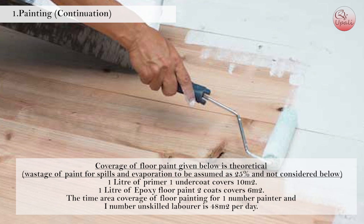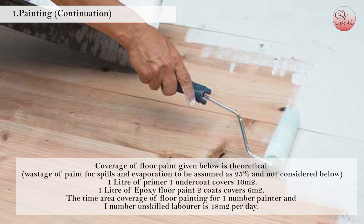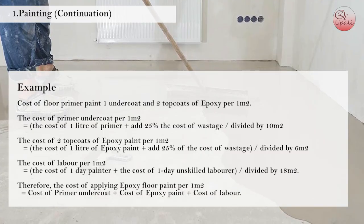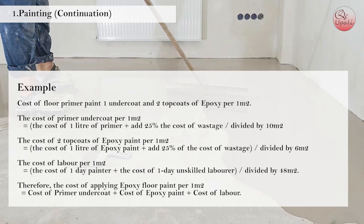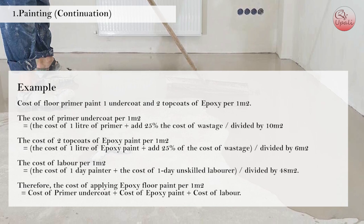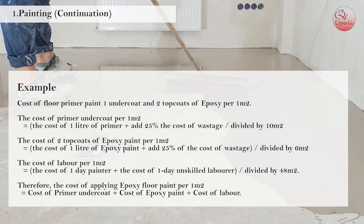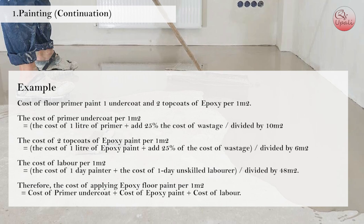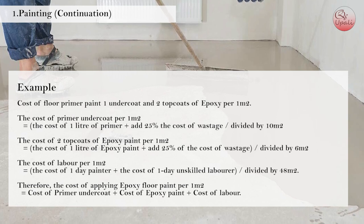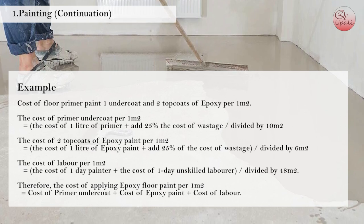The time area coverage for floor painting for one painter and one unskilled laborer is 48 meters square per day. Example: cost of floor primer paint, 1 undercoat and 2 top coats of epoxy per 1 meter square. The cost of primer undercoat per 1 m² equals the cost of 1 liter of primer plus 25% wastage, divided by 10 m². The cost of 2 top coats of epoxy paint per 1 m² equals the cost of 1 liter of epoxy paint plus 25% wastage, divided by 6 m².